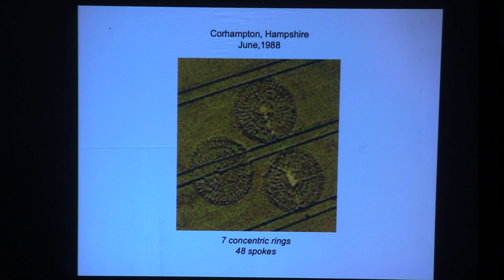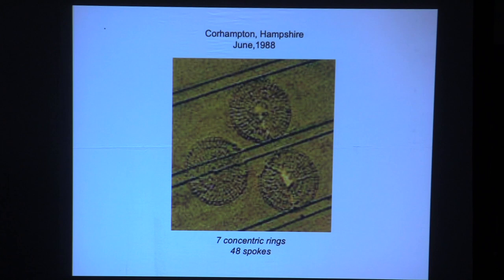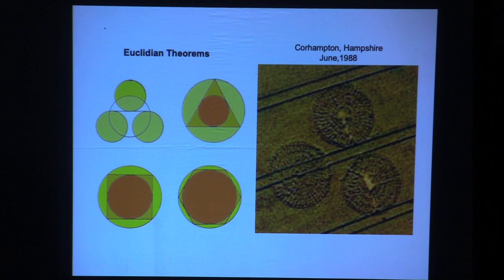What you're looking at is truly impressive — seven concentric rings and 48 spokes. The plants are not all flattened uniformly. They're flattened in certain ways: some groups flattened one direction, some another, at different levels, in order to create that effect. Then we have what looks like the Euclidean theorem. Robert Hawkins realized that, and discovered the other Euclidean theorems were also referenced in subsequent crop circles — all of them.